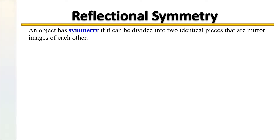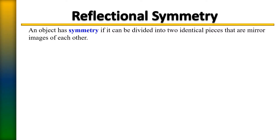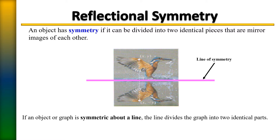Symmetry. An object has symmetry if it can be divided into two identical pieces that are mirror images of each other. In this example, you see a bird and a mirror image of that bird across a line. That line is known in the rectangular coordinate system as the x-axis. So if we were referring to it in terms of a graph, we would say this object is symmetric about the x-axis, meaning it is a mirror image reflected across the x-axis. If an object or graph is symmetric about a line, the line divides the graph into two identical parts.